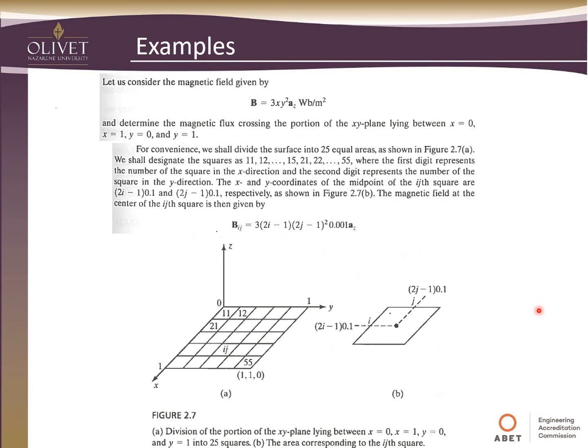So we're going to work this a couple of different ways. So for convenience, we're going to divide the surface into 25 equal areas here. And so we'll designate them each by where they are with the first number being the x number and the second number being the y number. So you can see then that the distance to the middle of each of these would be 0.1 and 0.1. So if this is one total, we're looking at 0.2 all the way across for each one of these. Hopefully that makes sense.